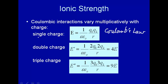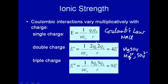The point is that if we double the charge — for example, NaCl has a +1 charge for q1 and a -1 charge for q2 — but magnesium sulfate dissociates into Mg²⁺ and SO₄²⁻, doubling the charges. The energy of interaction goes not twice but four times. And if you triple the charge compared to sodium and chloride, the interaction goes up by a factor of nine. The Coulombic interactions vary multiplicatively with charge.